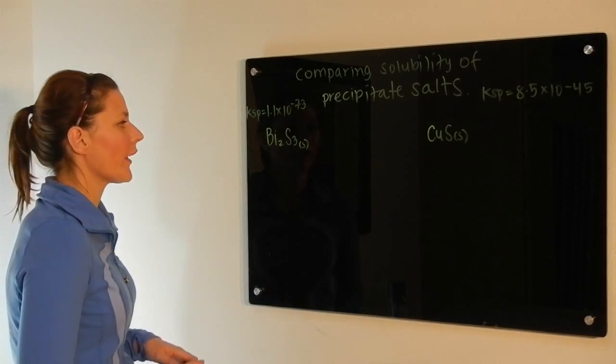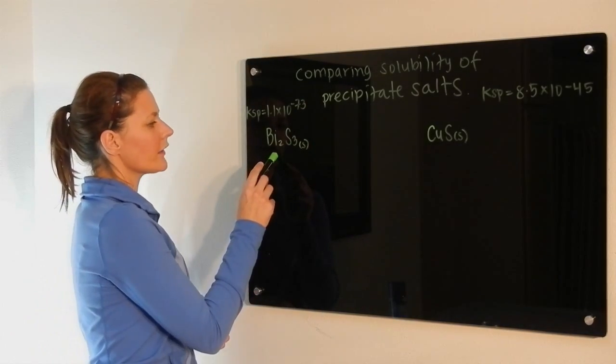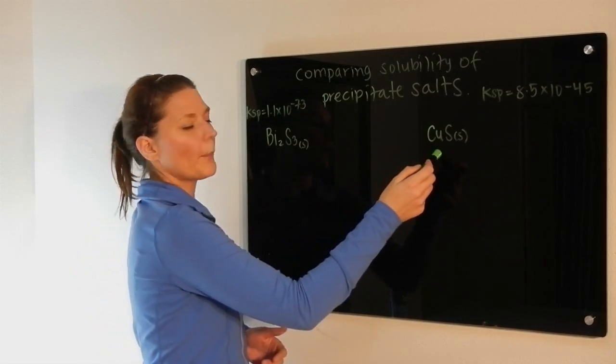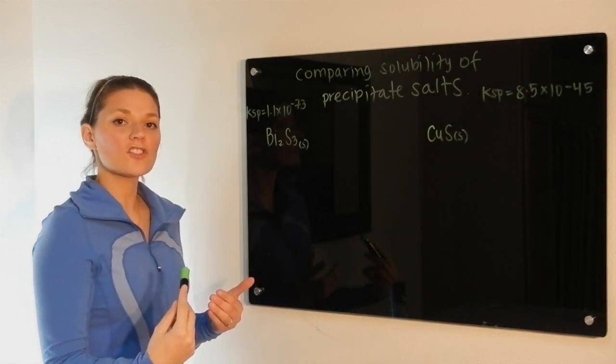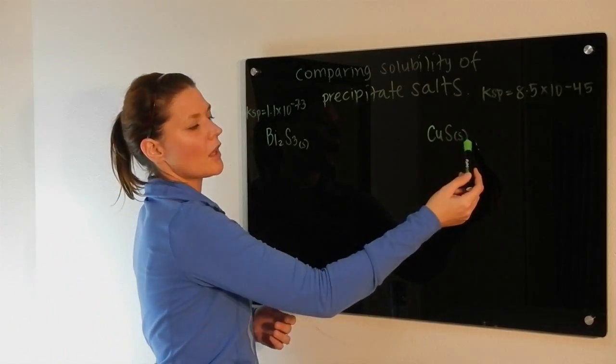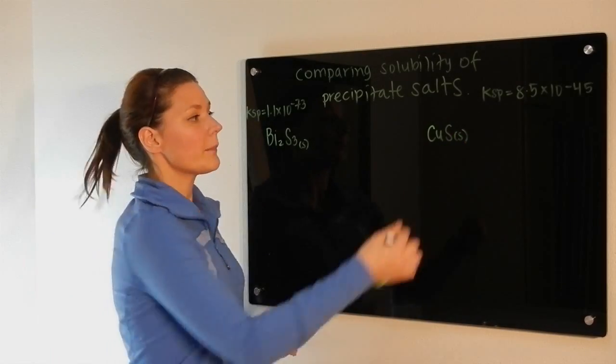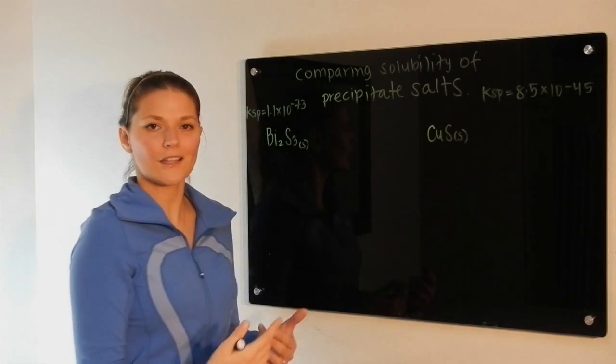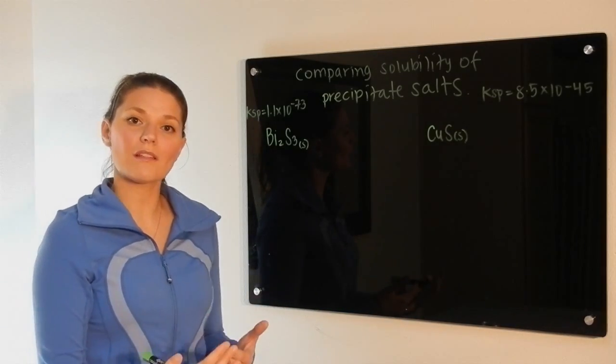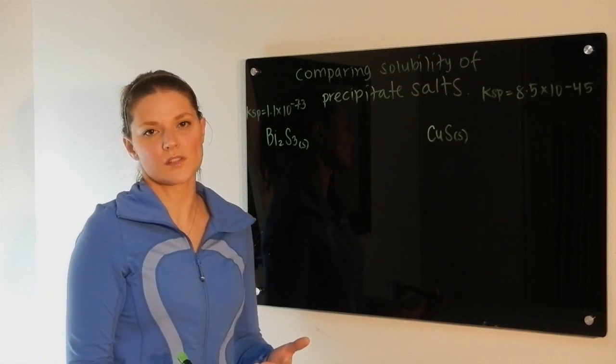If we take a look at the example we have, we're comparing the solid bismuth sulfide to that of copper sulfide. On initial inspection, you may want to pick copper sulfide as being more soluble because its Ksp value is significantly larger, and usually that does imply that something would be more soluble in solution.